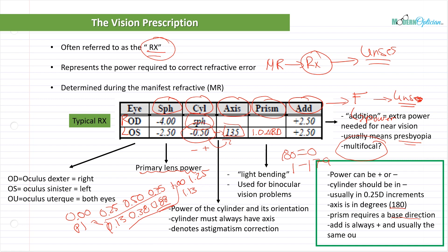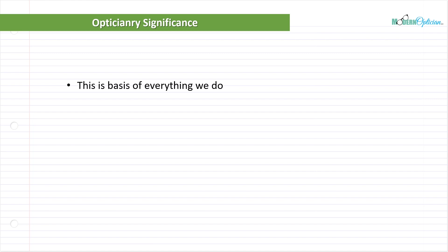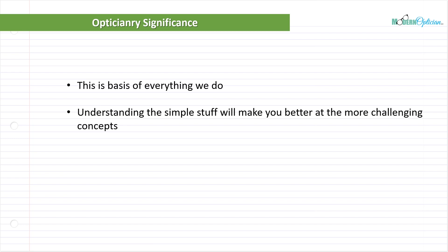We've touched on a lot of stuff, and I haven't really taught all of it yet — we're just touching the surface so that when we start talking about different things, you have a little bit of an understanding and a base of what it all means. From understanding refractive error to understanding the prescription to how it's corrected — that is the job, that is what an optician does. Understanding the simple stuff will make you better at the more challenging concepts. So make your notes, get a good grasp of this, and it's going to come as we go through the future lectures.